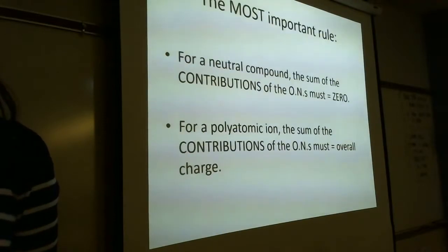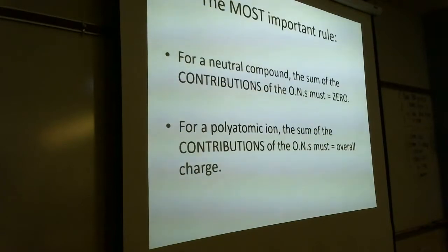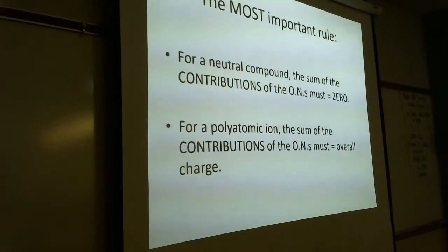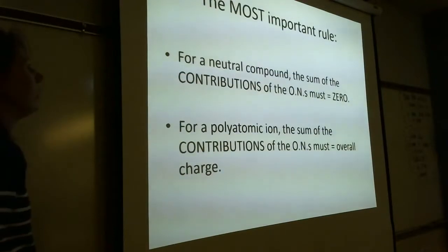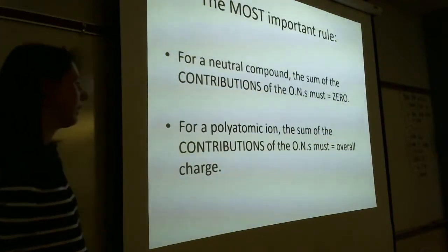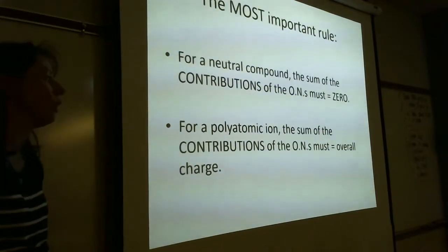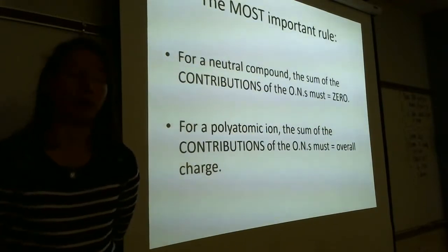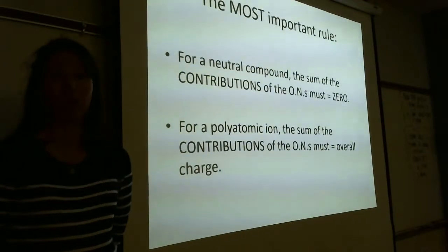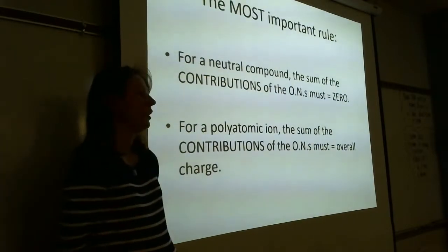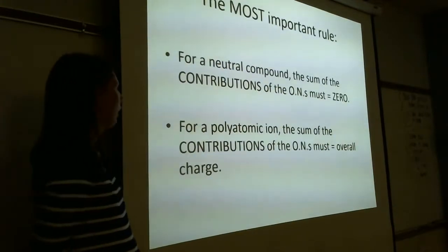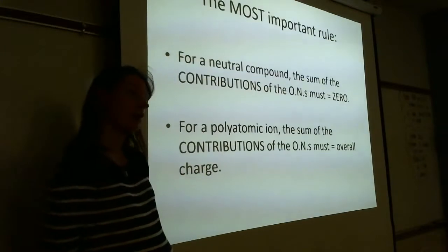Here are the two most important rules. For a neutral compound — one with no charge — the sum of all oxidation number contributions must add up to zero. For a polyatomic ion like nitrate, sulfate, or ammonium, the sum of the contributions must equal the overall charge. So for sulfate with a -2 charge, all contributions need to add up to -2. Contributions means oxidation number times how many of that element.